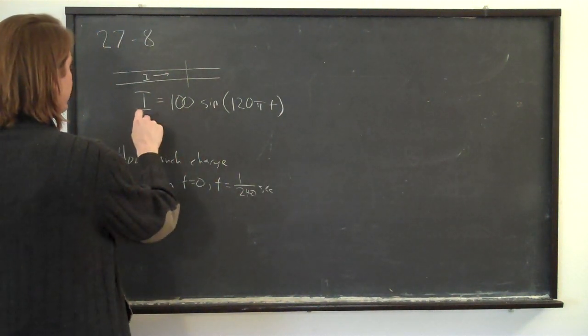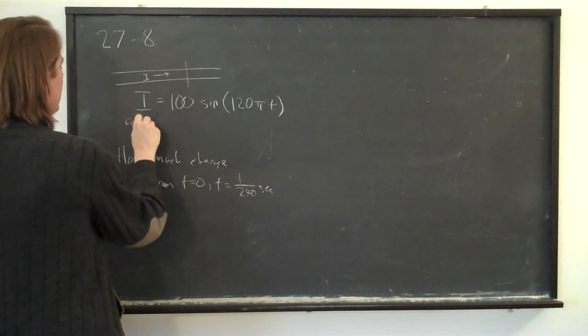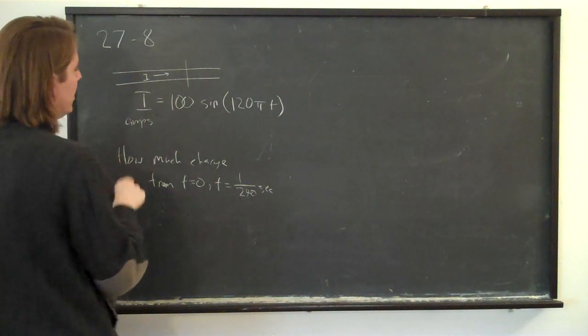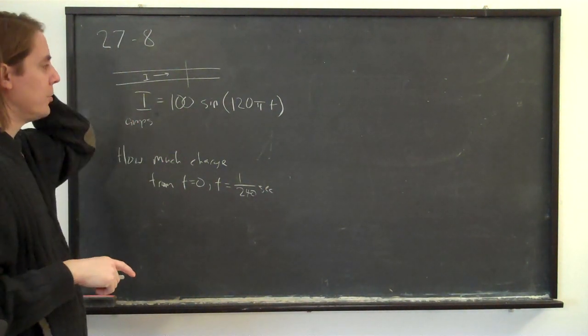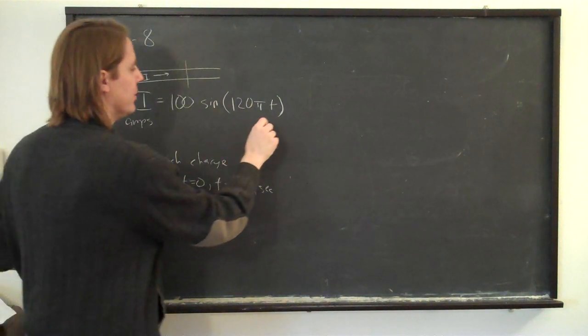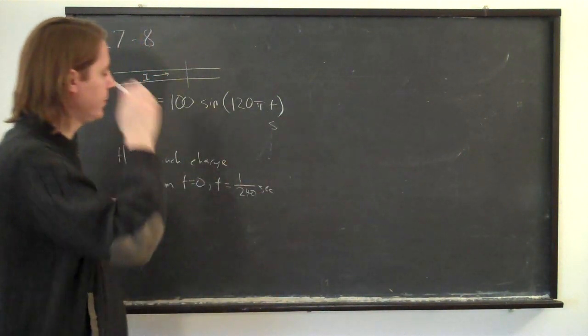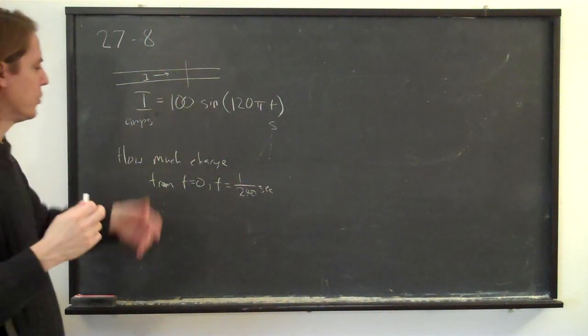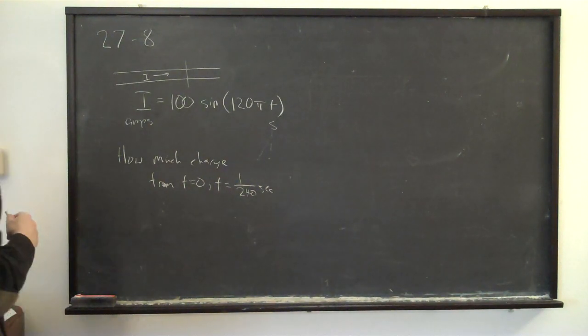And you also need to know that the current, if you use this formula, is in amps, which would mean that that amplitude of the sinusoid must be in amps, and the time is in seconds, and we're asking for charge in Coulombs.